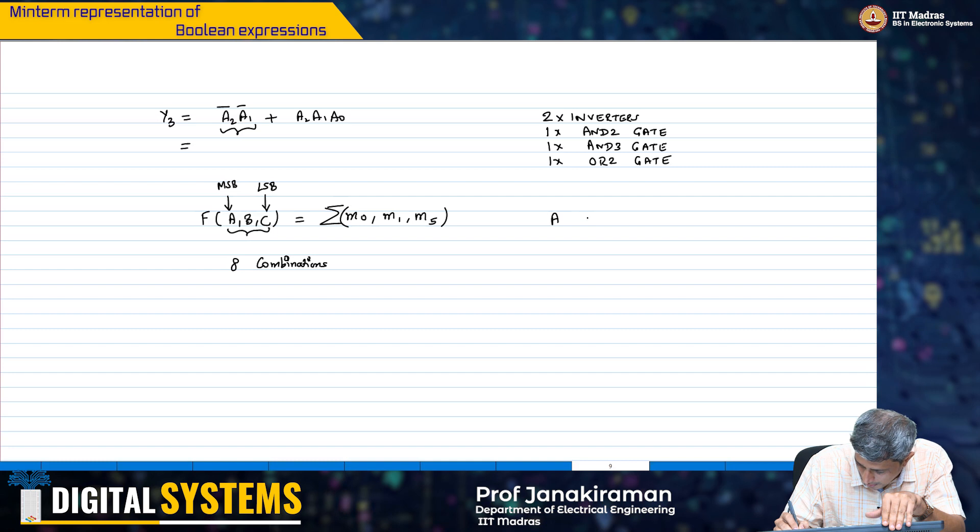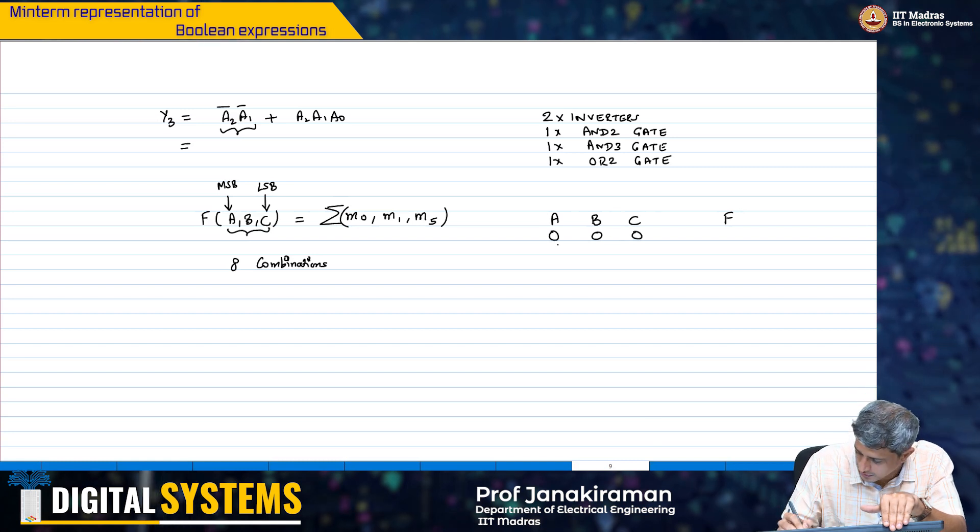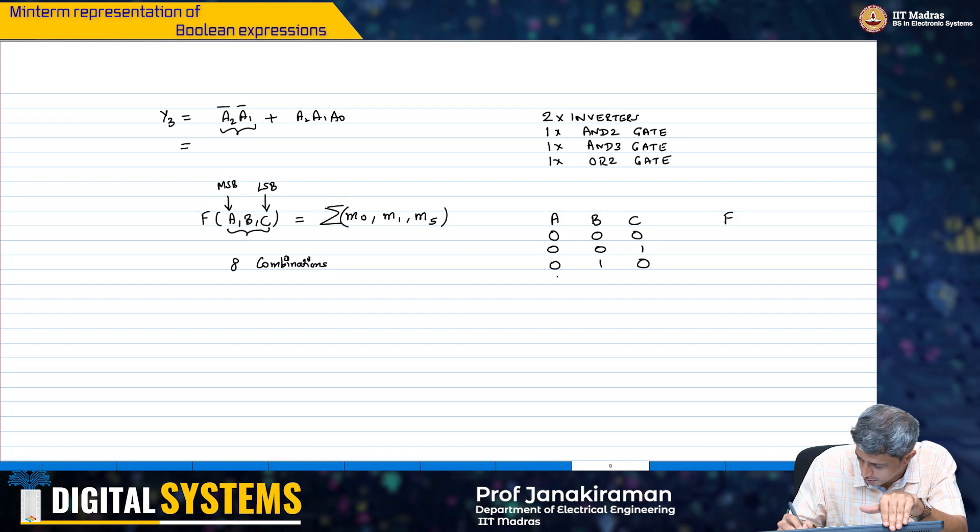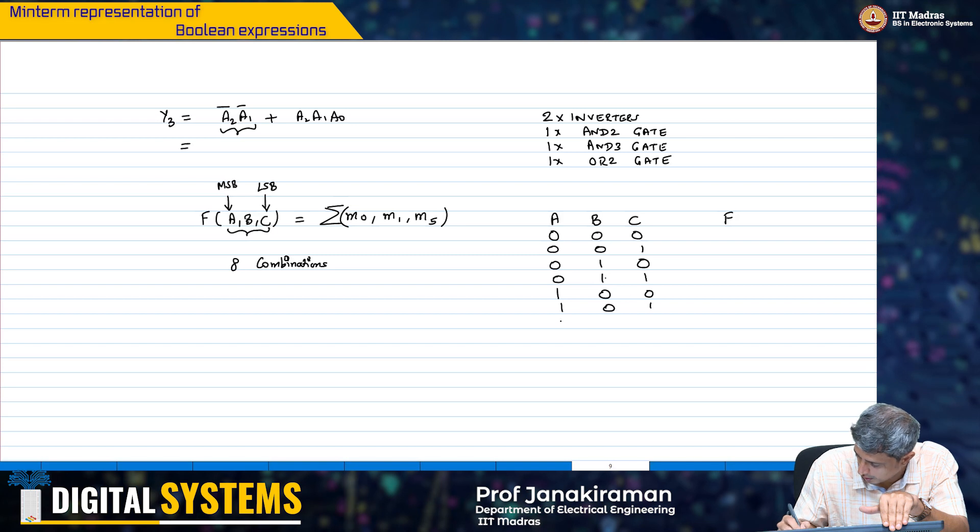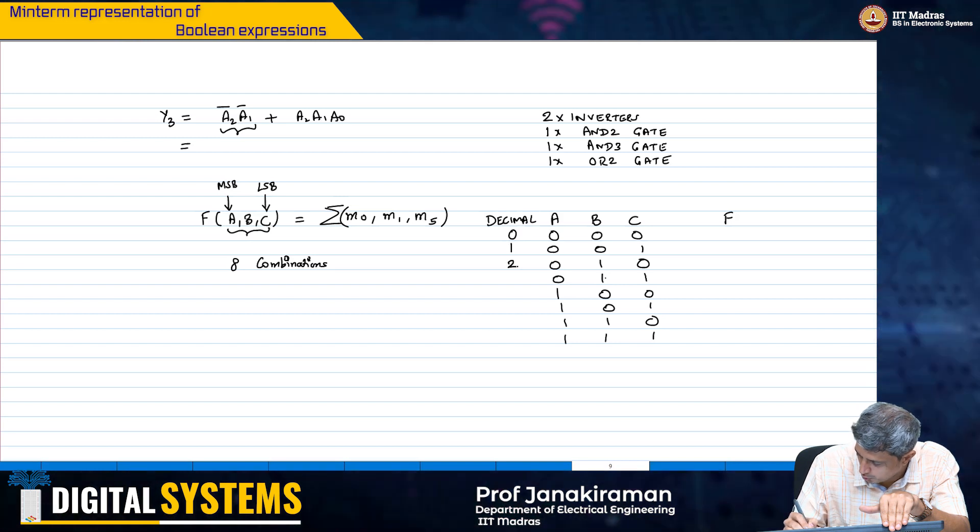So, therefore, I will have A, B, C and my function F here. So, I am going to write out all the combinations: 0, 0, 0; 0, 0, 1; 0, 1, 0; 0, 1, 1; 1, 0, 0; 1, 0, 1; 1, 1, 0; and 1, 1, 1.